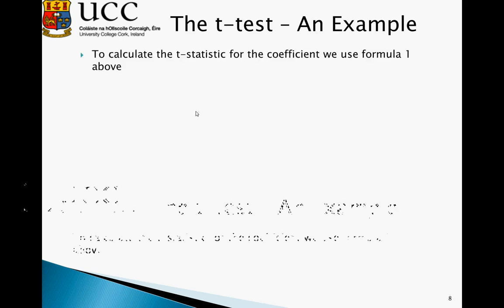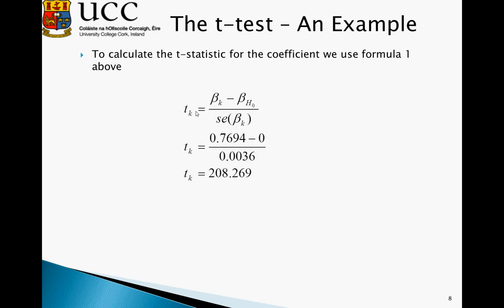So to calculate the t-statistic for the coefficient, we use the formula we discussed above. We have the beta coefficient minus the hypothesized value of the beta coefficient all over the standard error of the beta coefficient. In this instance, this gives us, as the numerator, 0.7694 minus 0, and as the denominator, 0.0036.